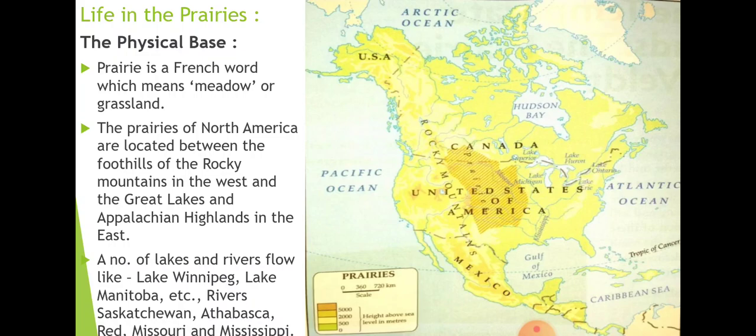The areas drained by these rivers were originally in the form of grassland but have gradually been converted into agricultural land. These rivers and water bodies have helped a great deal in this transformation. The temperate grassland covers the provinces of Alberta, Saskatchewan, and Manitoba in Canada.